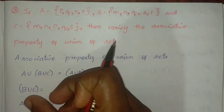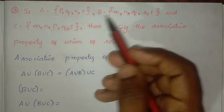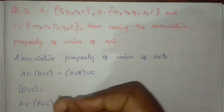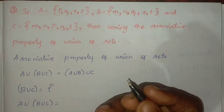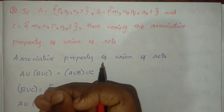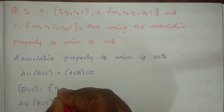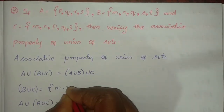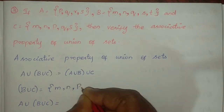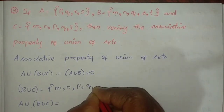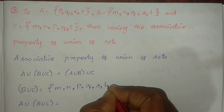A union (B union C): first find B union C. The union contains elements M, N, Q, S, T.